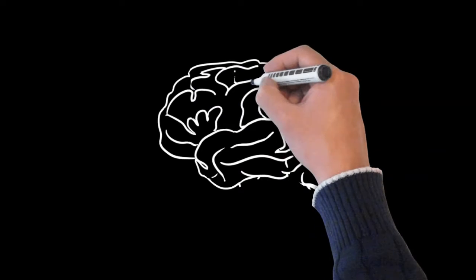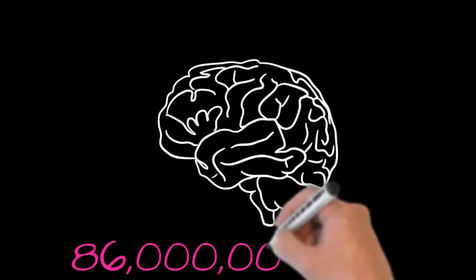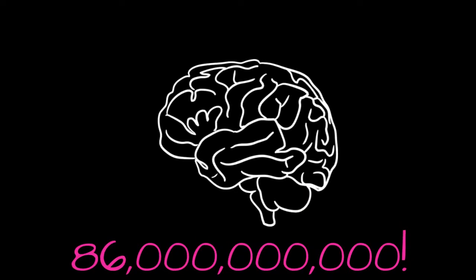It is often called the most complex object in the known universe, for good reason. There are around 86 billion neurons in our brain, with trillions of connections among them.